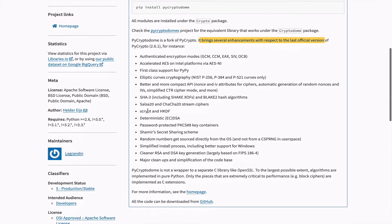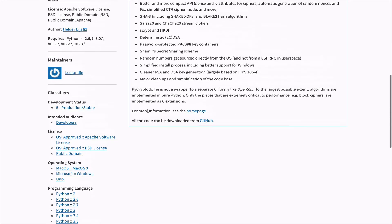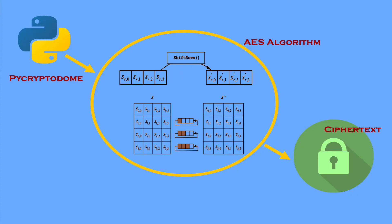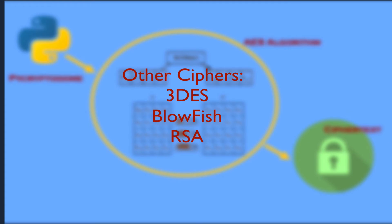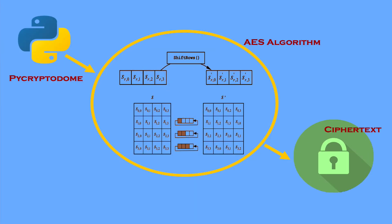In our example we're going to use pycryptodome with AES, or Advanced Encryption Standard cipher, to encrypt text. AES is of course only one of the ciphers that work with pycryptodome. The libraries also work with legacy ciphers such as Triple DES and Blowfish. You can also use RSA for public key or asymmetric encryption, and we'll be doing that in videos shortly.